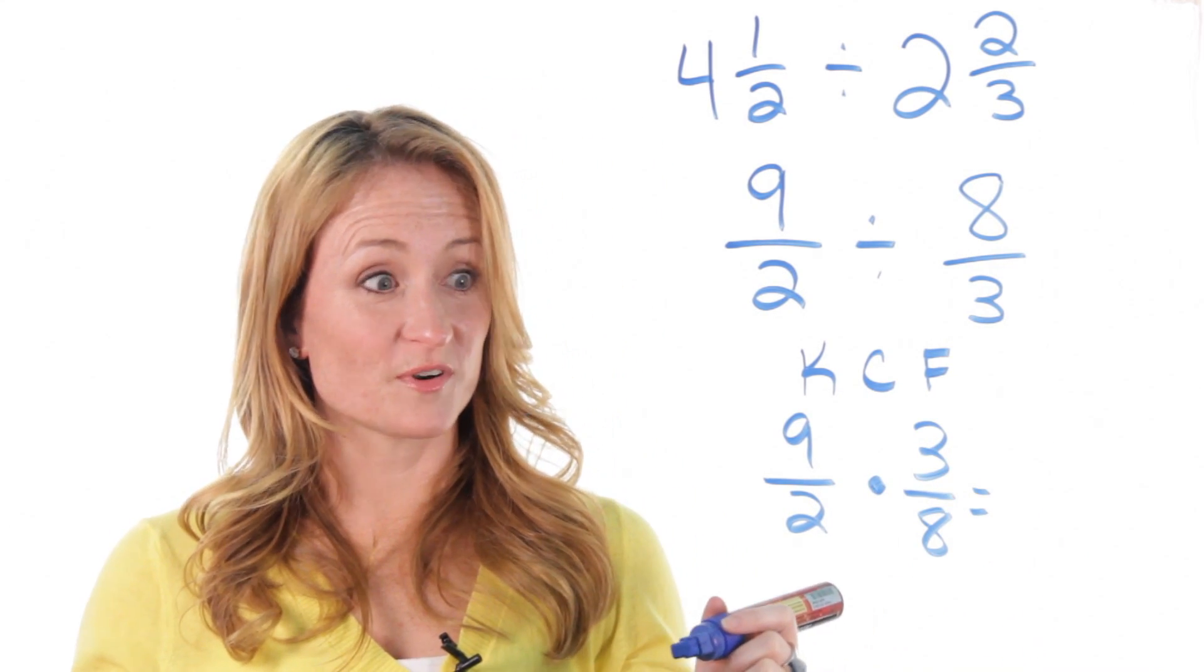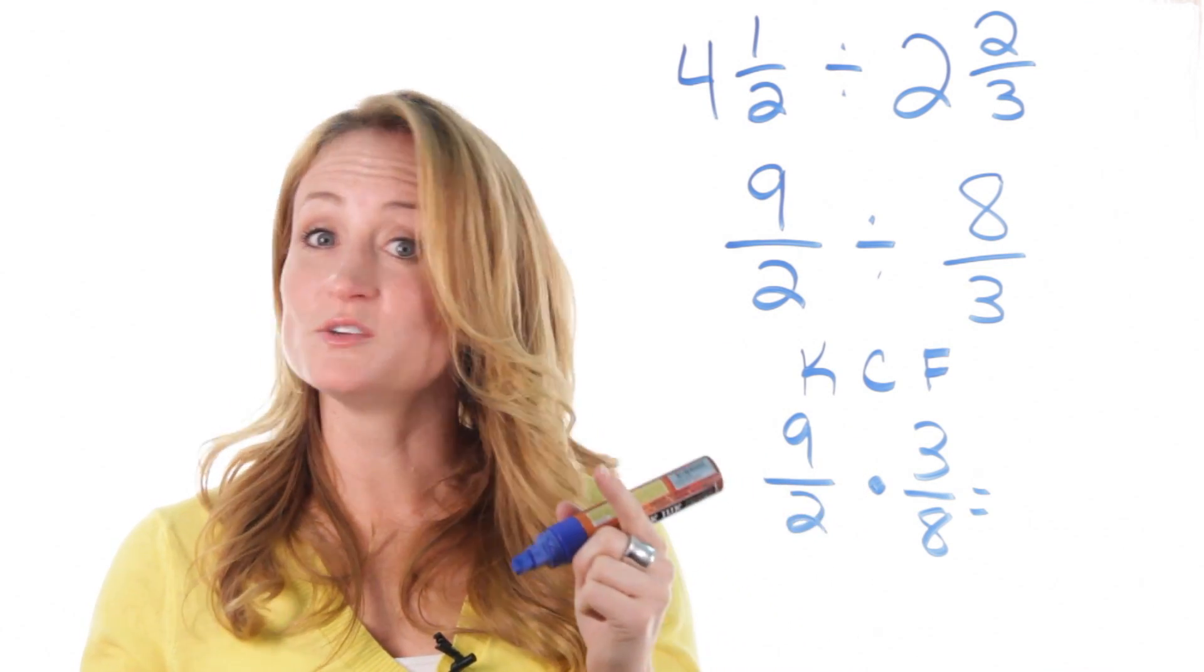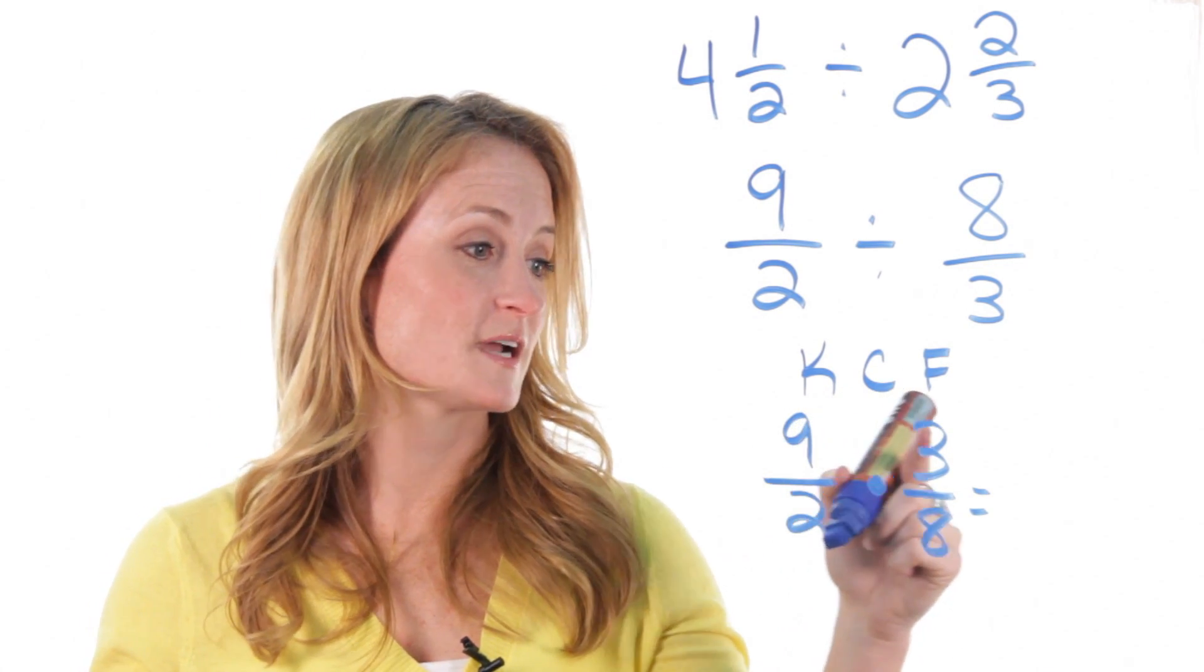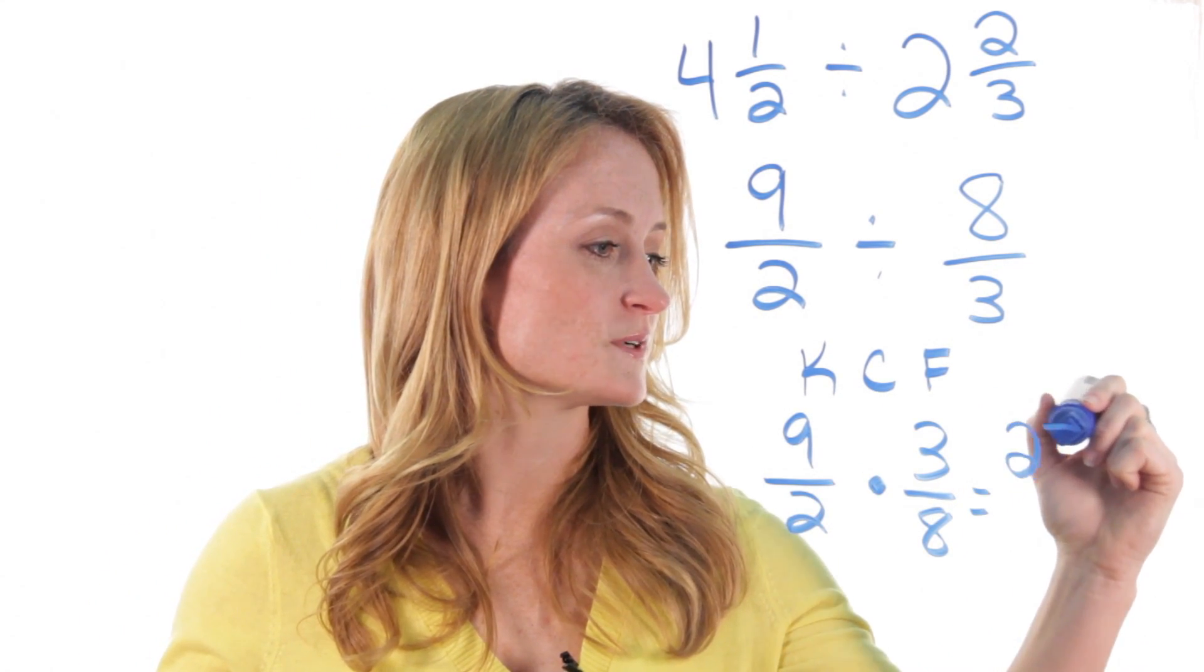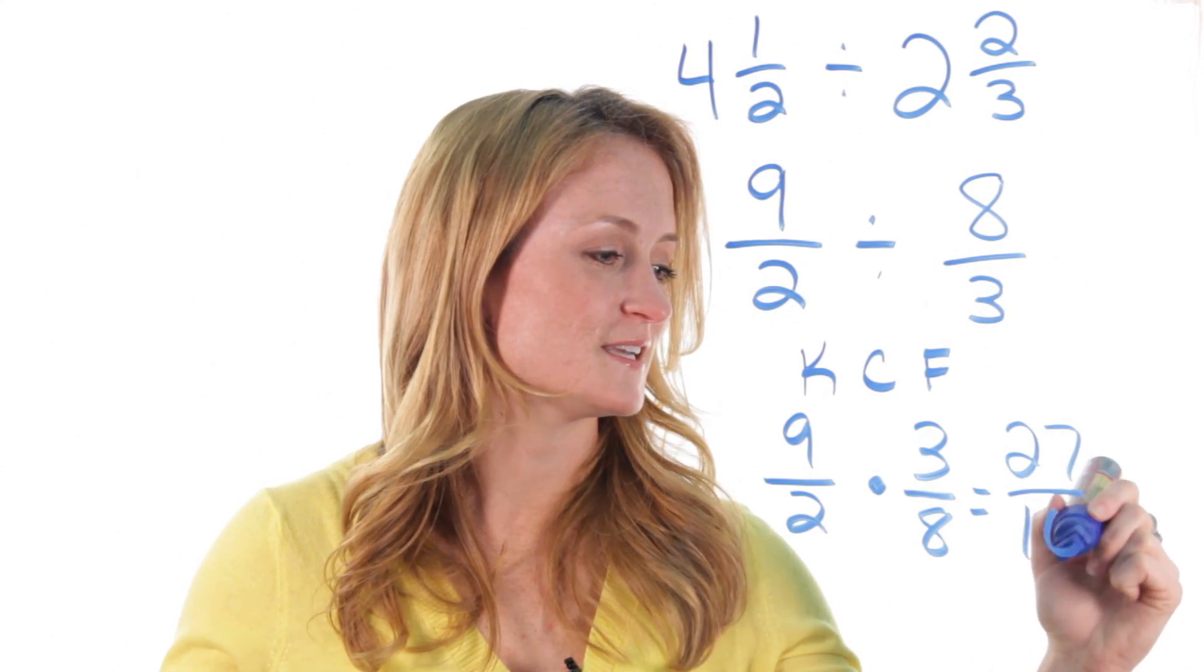You also remember now, in multiplying fractions, you just multiply straight across. So 9 times 3 is 27, and 2 times 8 is 16.